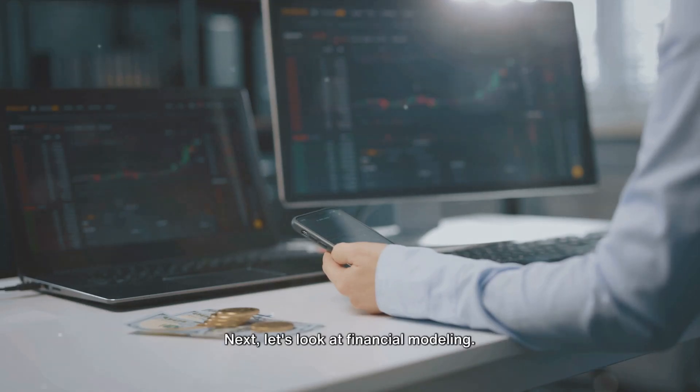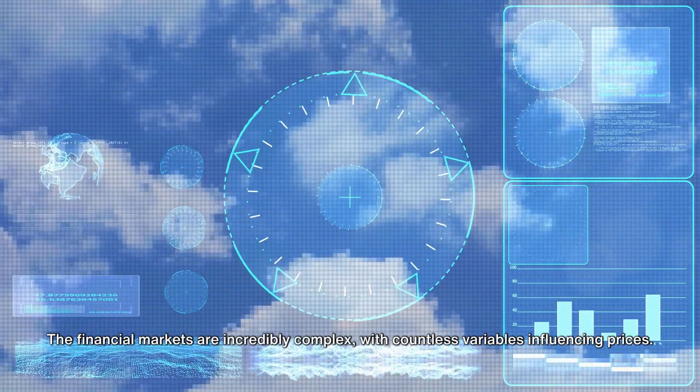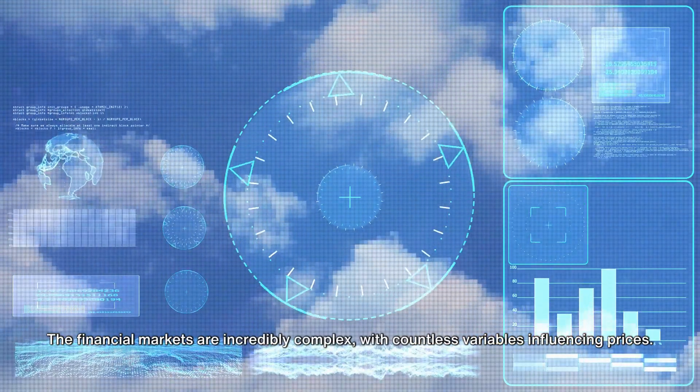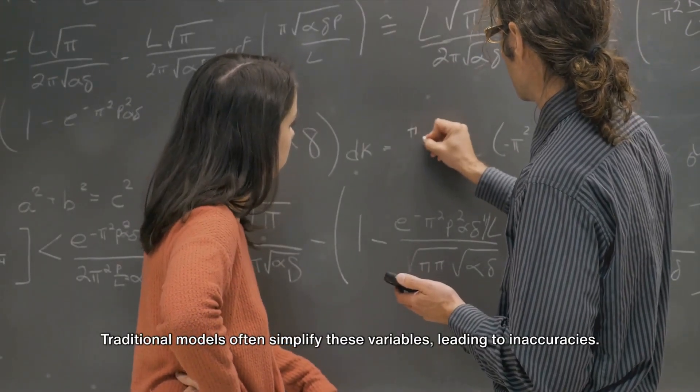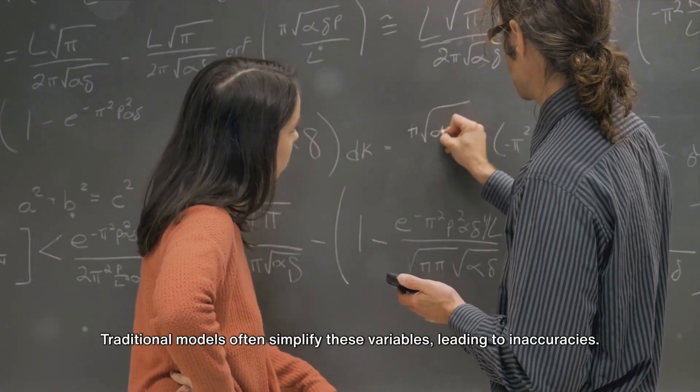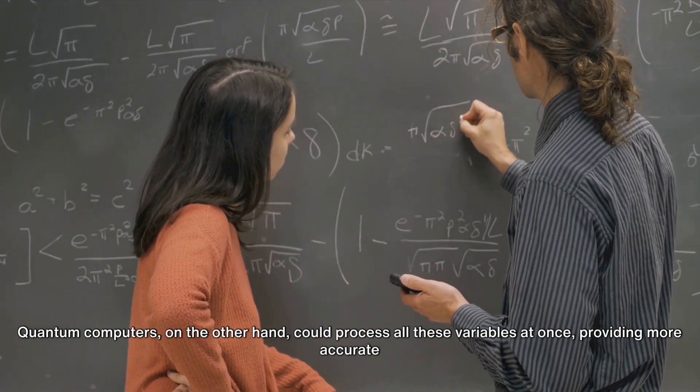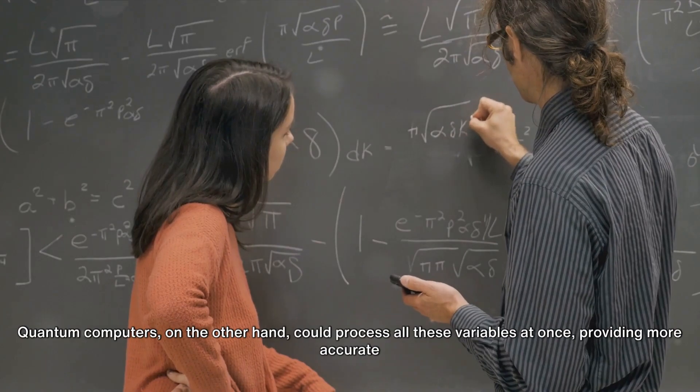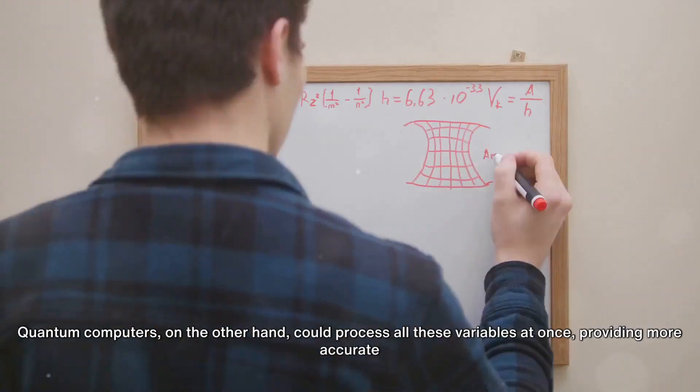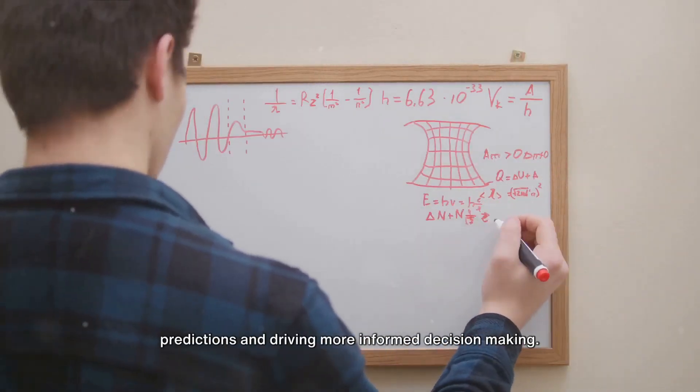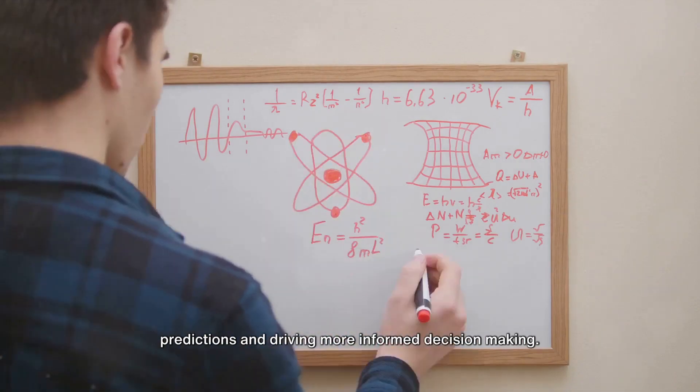Next, let's look at financial modeling. The financial markets are incredibly complex, with countless variables influencing prices. Traditional models often simplify these variables, leading to inaccuracies. Quantum computers, on the other hand, could process all these variables at once, providing more accurate predictions and driving more informed decision-making.